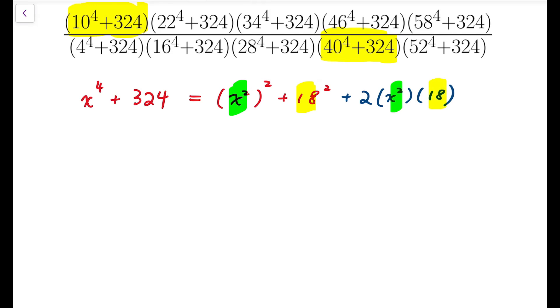But of course, we can't simply add something into x to the 4 plus 324, so I'm going to subtract the same thing. So 1 add and 1 minus, and both sides will then be balanced.